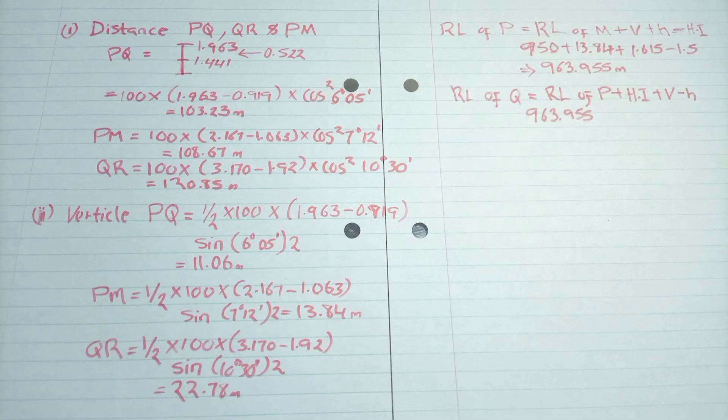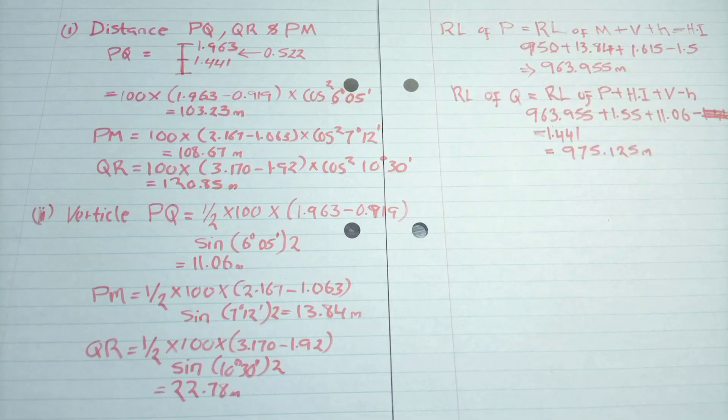So there will be a slight difference in the height of instrument, where we'll add the height of instrument, then we'll add the vertical distance, then we'll minus the H, which is the middle distance, then for R, we will do the same.